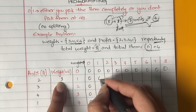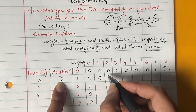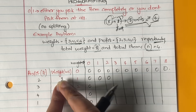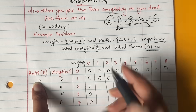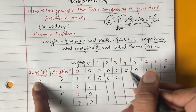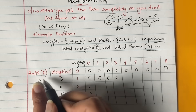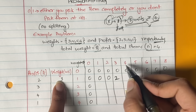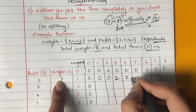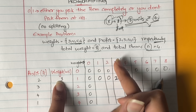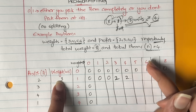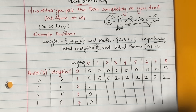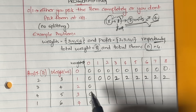Now for row 1: the weight is 3. Can you fill 3 in column 1? No. Column 2? No. Column 3? Yes. So write the profit associated with weight 3, which is 2. Once you can accommodate weight 3 in column 3, you can also accommodate it in columns 4, 5, 6, 7, 8 — so the profit remains 2 for all those columns.